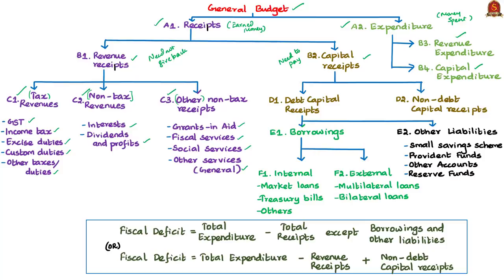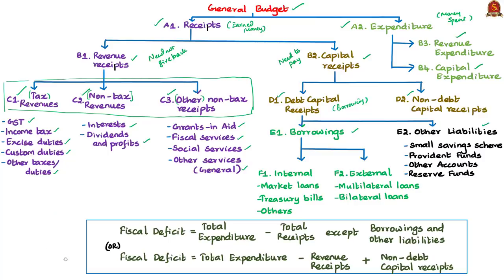Just have an idea about the three different types of revenue receipts. Under capital receipts, there are two types: debt capital receipts and non-debt capital receipts. Debt capital receipts means money earned by the government by borrowing — from the bank or from the market. Debt capital receipts can be classified into borrowings and other liabilities. Borrowings are further classified into internal borrowings — in the form of market loans, treasury bills, securities and compensation bonds — and external borrowings, classified as multilateral loans and bilateral loans.